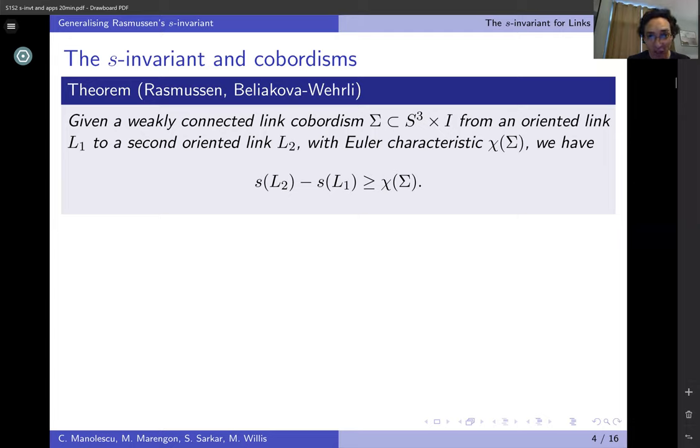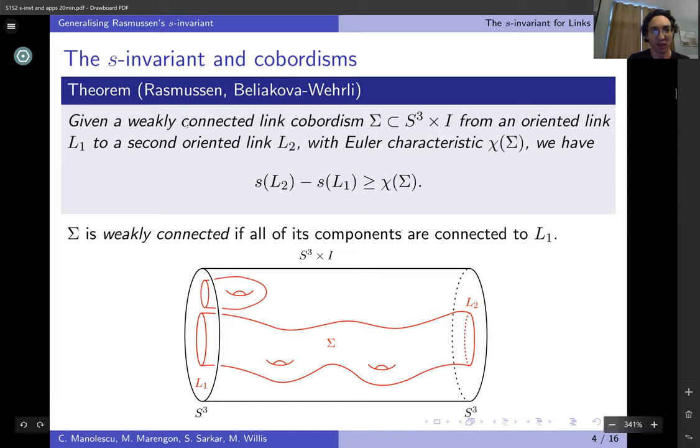If you're handed a weakly connected link cobordism from one oriented link to another, then the Euler characteristic of your cobordism is bounded by the difference in the S invariants of the two links. Here's the picture of what this weakly connected hypothesis is. Your link cobordism in S³ cross I needs to be such that every component of it is connected to the first link. This is really just a game of how you want to make sure that orientations on one link determine orientations on the other.